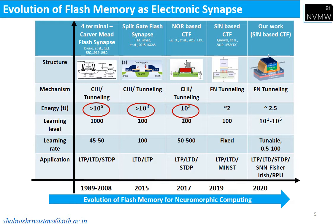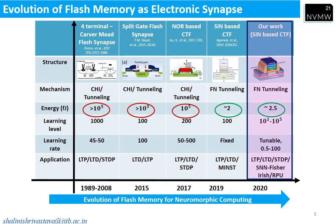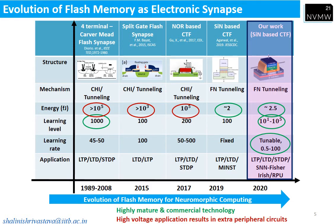In 2017, Prof. Subramaniam's group from UCLA demonstrated STDP with NOR-based charge trap flash. In 2019, a group from Berkeley proposed SONO-based synapse and demonstrated FN tunnel low-energy synapse. Parallelly, our group is also working on the same device. We have demonstrated different applications published in 2020 at IJCNN. In this talk, I will discuss silicon nitride based charge trap flash memory as a synapse, covering different learning variables, tunable learning rate, and its effect on variability and scalability. Though this technology is highly manufacturable and commercial, it operates at high voltage, which results in extra peripheral circuitry — the only disadvantage of this technology as a synapse.